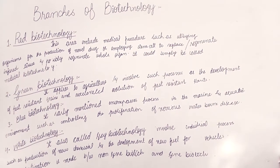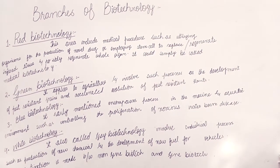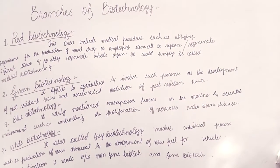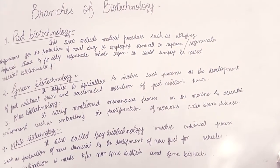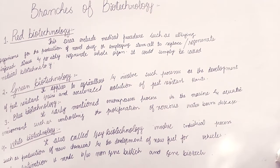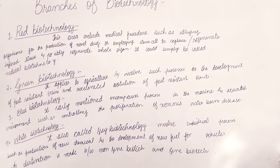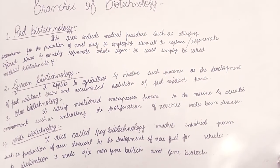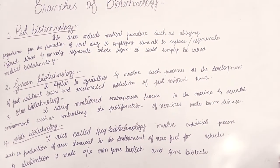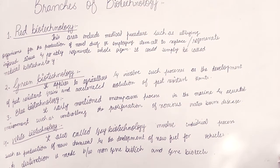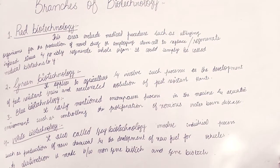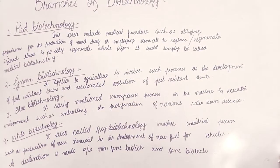Hello everybody and welcome to Biological World. Now we will discuss the branches of biotechnology. The first branch is red biotechnology. This area includes medical procedures such as utilizing organisms for the production of novel drugs, employing stem cells to regenerate or replace injured tissue, and possibly regenerate whole organs. It could simply be called medical biotechnology.